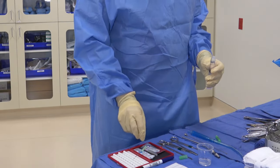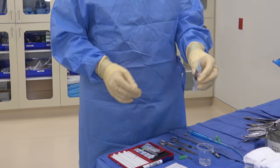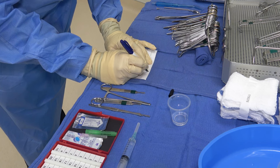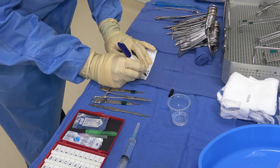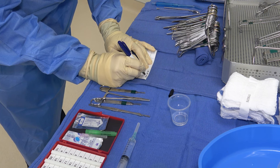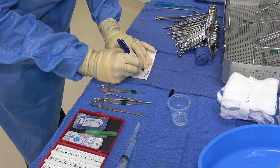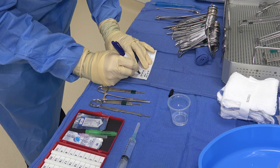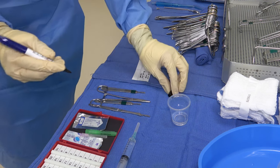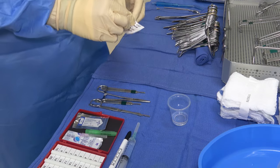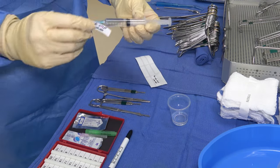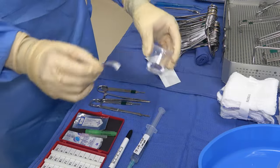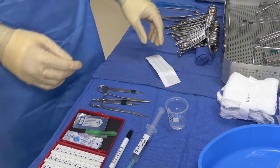Once back at our table, we replace the filter needle with a small hypo needle. No matter which method you use, once the medication is on your field you immediately label any container that may hold that medication. This usually means making two labels — one for your medicine cup and one for your syringe. Use the black tip of your pen to write your labels, as the purple ink tends to smear easily. Write the name of the medication and the strength; if there is epi, write that as well. You only need to include an expiration date on the label if the medication may not be used within 24 hours.